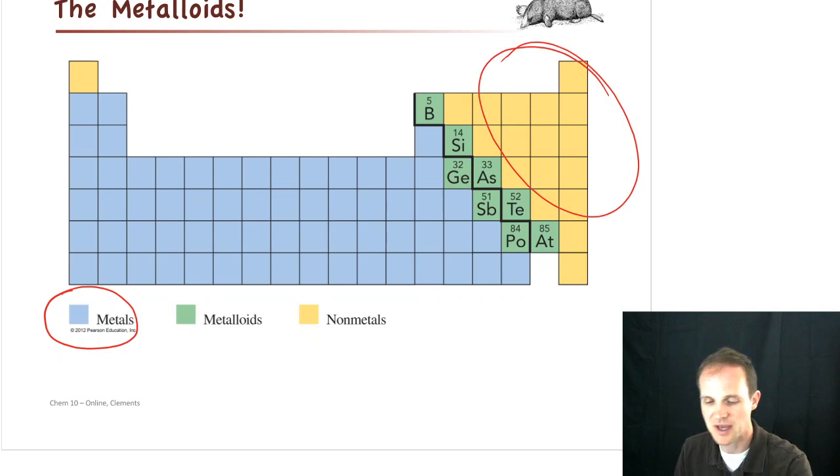On the top right, up here in the yellow, we have what are called the non-metals. And those have the opposite properties of metals. They don't conduct electricity very well. They aren't malleable, bendable. If you try to hit a diamond with a hammer, what happens? It shatters. So they tend to be called brittle.